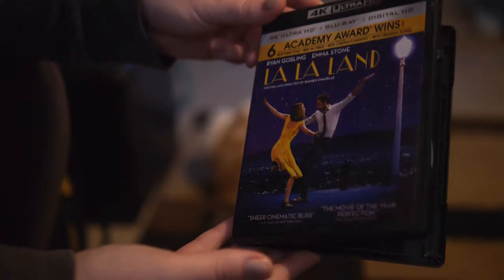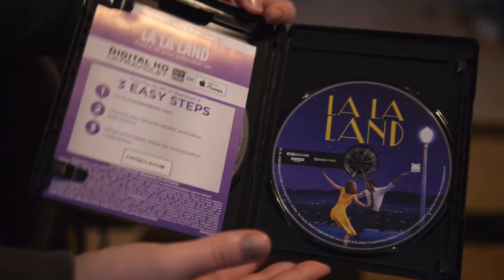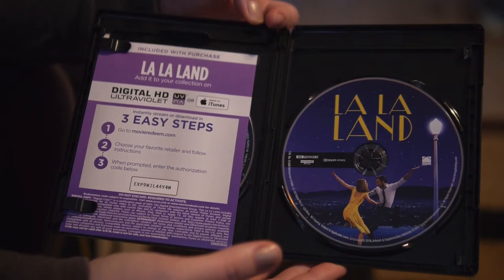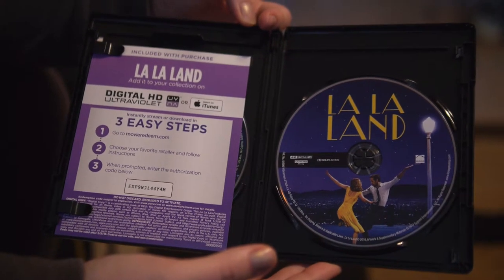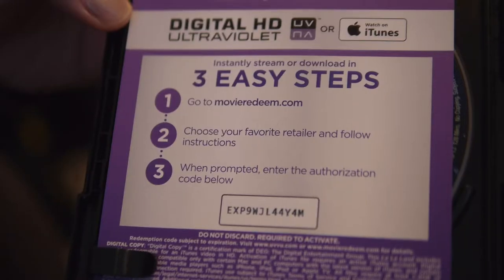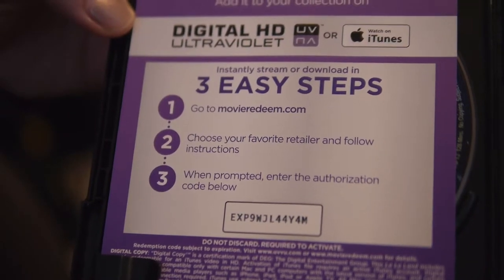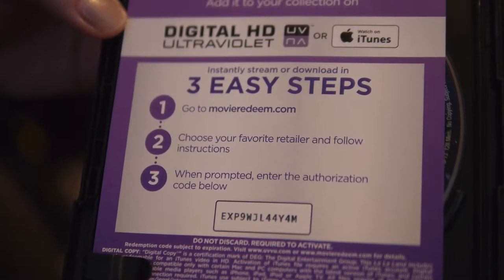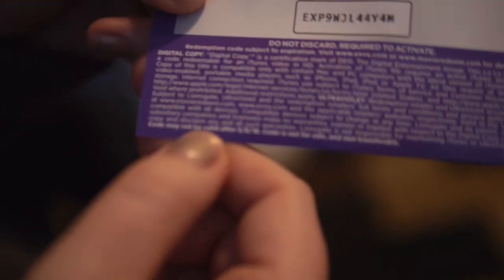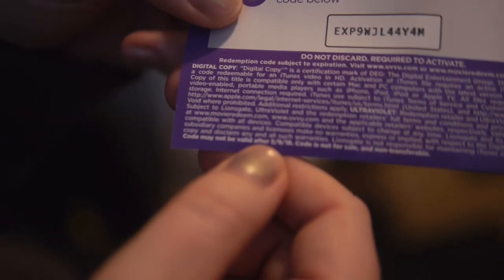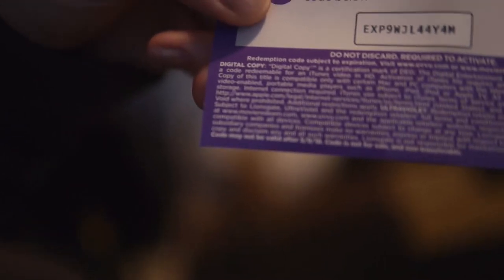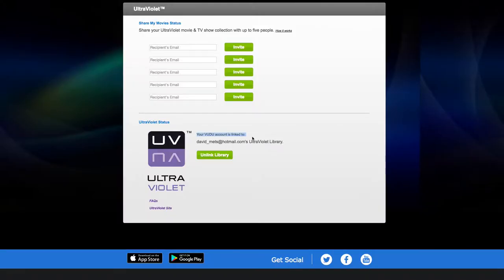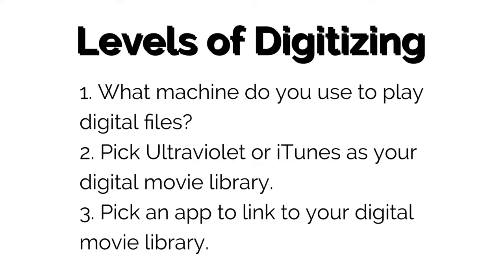To access the digital copy you'll need a code. Inside the case you'll most likely find a paper like this with a long code on it. This code can be used once, so enter it right away and don't share it. Some codes expire as well, so the best time to do it is right after you open the movie.